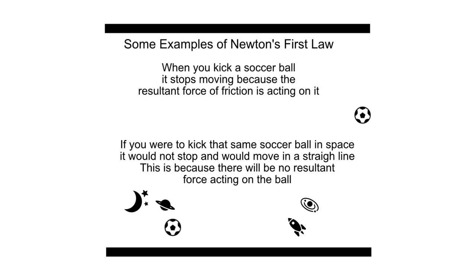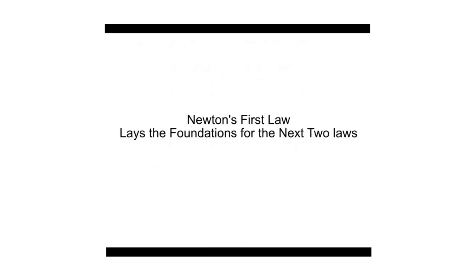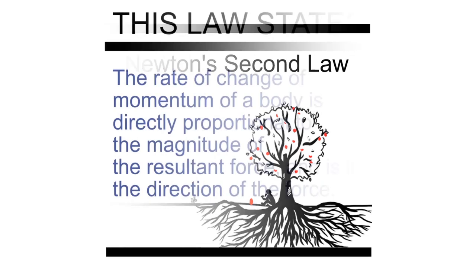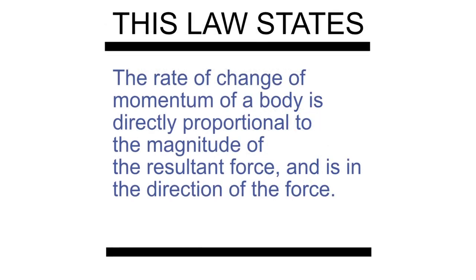Now let's have some more examples of Newton's first law. When you kick a soccer ball, it stops moving because a resultant force is acting on it. What is this resultant force? Well, it's friction. Friction is acting. As the ball moves, friction acts on it. This is why when you kick the soccer ball, it almost starts slowing down immediately. And it's slowing down means there's a change in acceleration. It is decelerating.